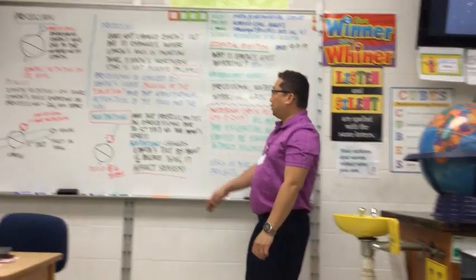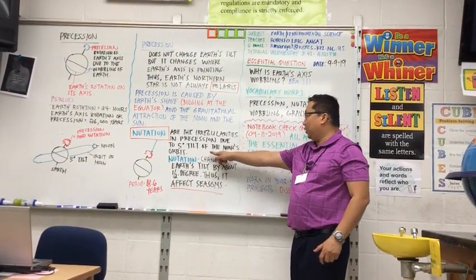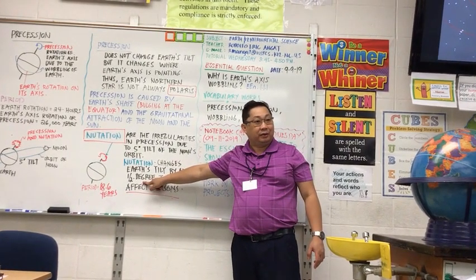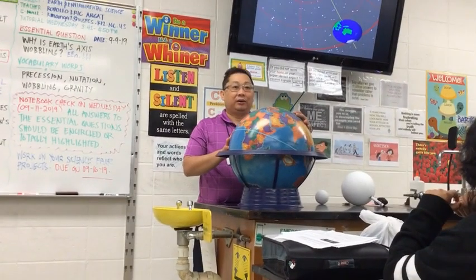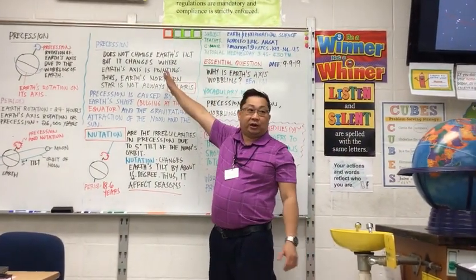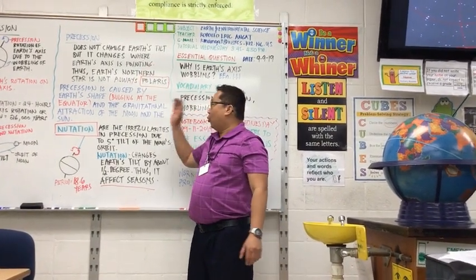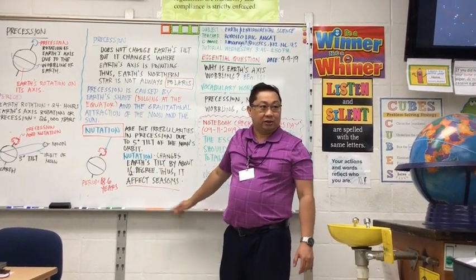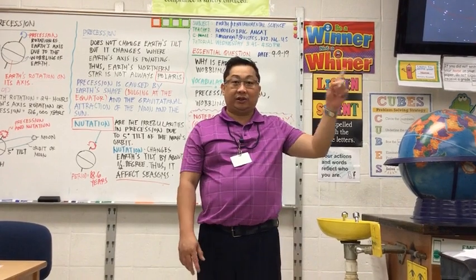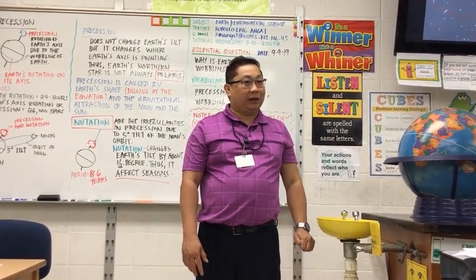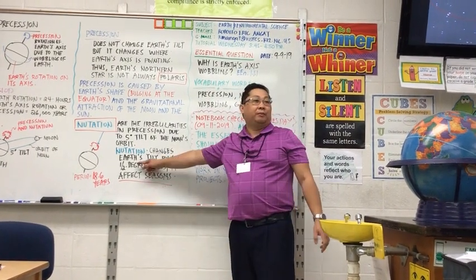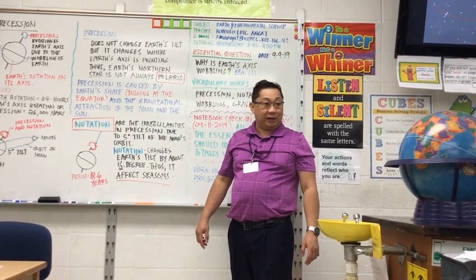Nutation, unlike precession, causes the Earth's axis to change by about one-half degree. Because of that, nutation influences the seasons. To summarize: precession changes the Northern Star, while nutation influences our seasons. There are two factors that affect the seasons of Earth — the first is Earth's tilt, and the second is nutation, which influences Earth's tilt of 23.5 degrees by changing it either way by one-half degree. That is nutation.